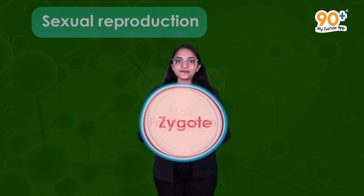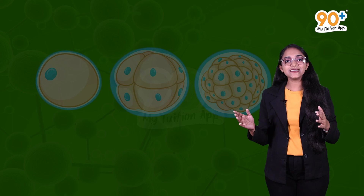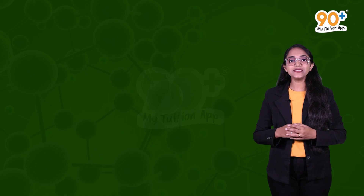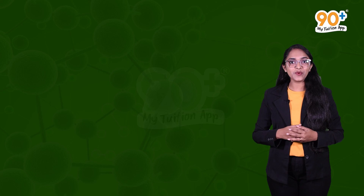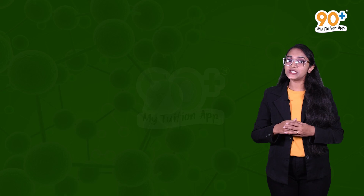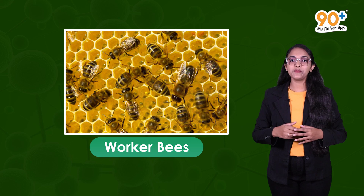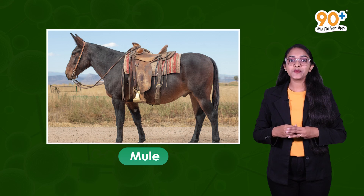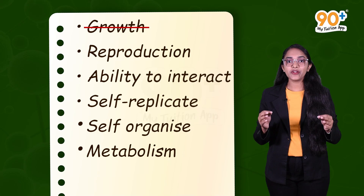The next type is sexual reproduction, where male and female gametes fuse together to form a zygote — a process called fertilization. This is usually seen in higher-level organisms. But wait — there are some living organisms which cannot reproduce. Worker bees in a honeybee colony are sterile and cannot reproduce. The mule is another sterile organism, being the offspring of a male donkey and a female horse. Hence, reproduction is not a defining characteristic of the living world.